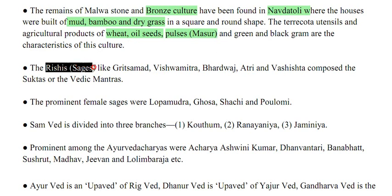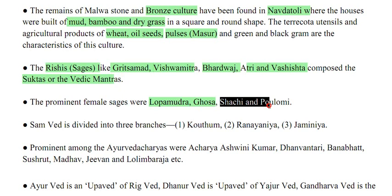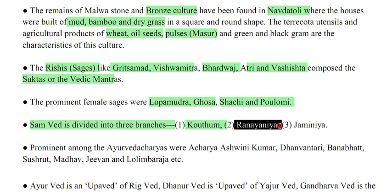Rishis and sages like Grissamad, Vishwamitra, Bharadwaj, Atri and Vasisth composed the Suktas or Vedic Mantras. Prominent female sages were Lop Mudra, Ghosh, Sachi and Pallame. Samveda is divided into three branches: Kotham, Raninya, and Jamirya.